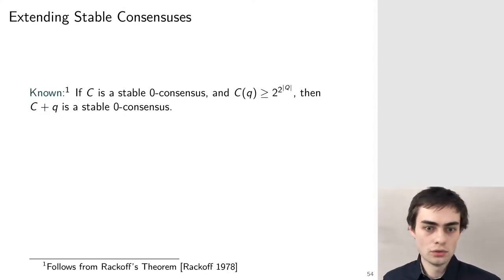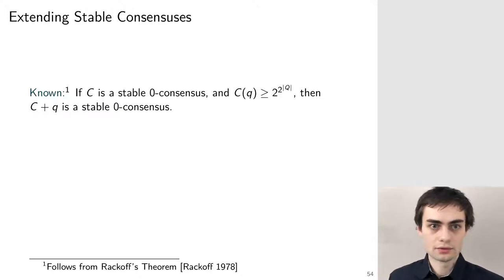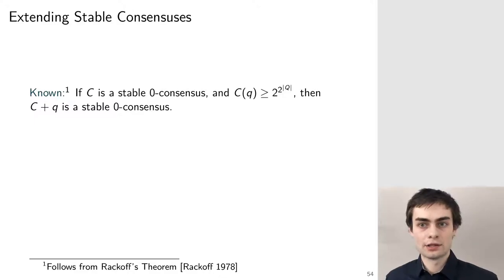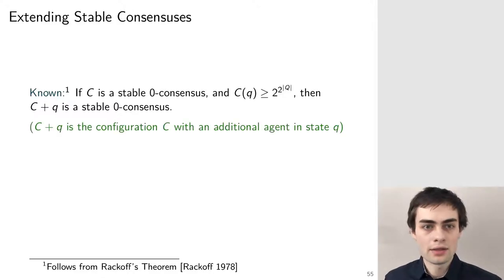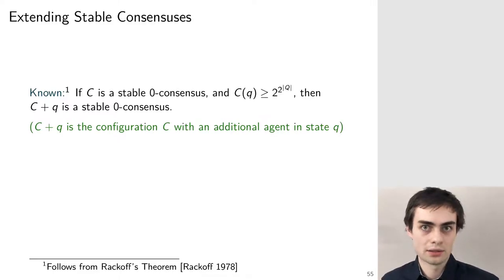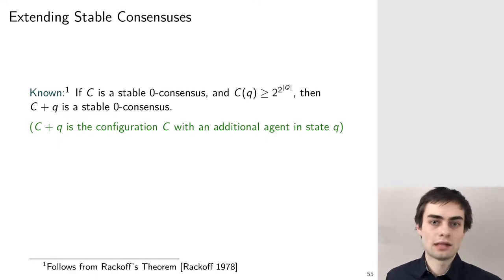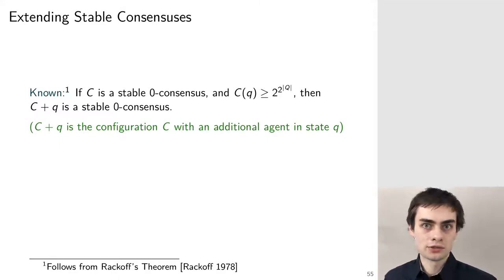We can use a known fact following from Rackoff's theorem of coverability in vector addition systems. If you have a stable rejecting consensus and a certain state in the consensus has at least a double exponential number of agents, then adding another agent to that state still results in a stable rejecting consensus. So we can extend stable rejecting consensuses by adding agents to states where there are already a double exponential number of agents.